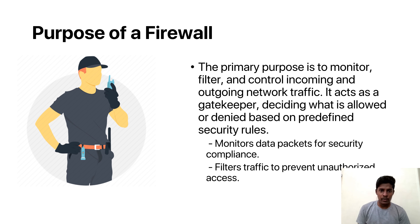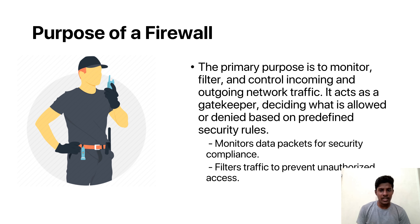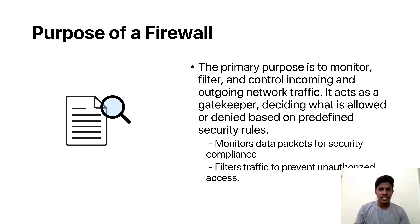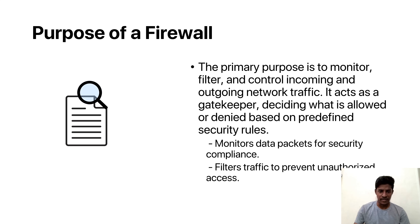Now we know what a firewall is, let's explore its primary purpose. A firewall's job is to monitor, filter and control incoming and outgoing network traffic. It acts as a gatekeeper examining each piece of data that enters or leaves the network. Based on predefined security rules, it decides whether to allow or deny network traffic.